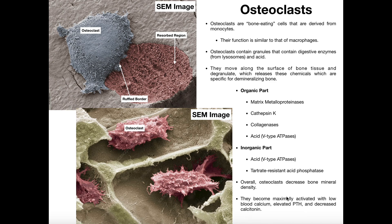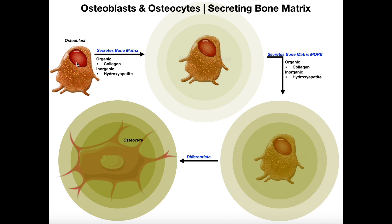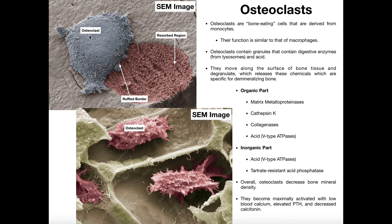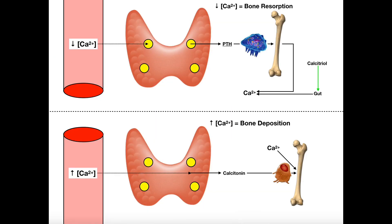PTH will also inhibit the function of osteoblasts. Osteoblasts decrease blood calcium levels because they pull calcium out of the blood to deposit it into bone matrix. So PTH increases osteoclast activity while decreasing osteoblast activity. Additionally, osteoclasts are more active when calcitonin levels are decreased, as calcitonin is the antagonistic hormone to PTH. We'll cover this negative feedback regulation of calcium, osteoclasts, and osteoblasts in detail in the next video.